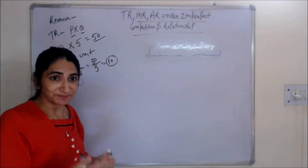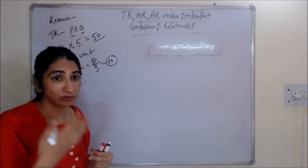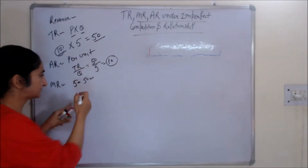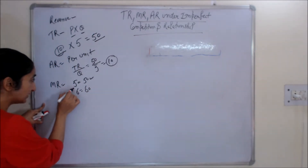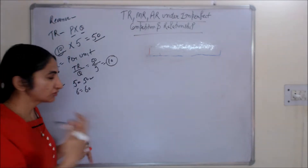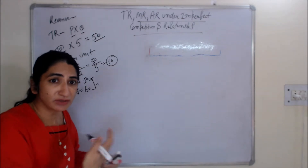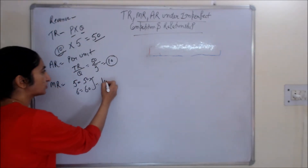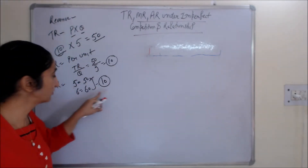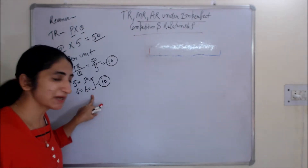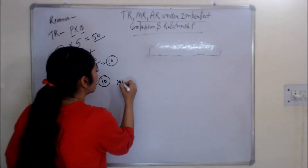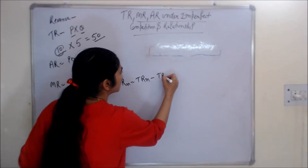Marginal revenue is the additional revenue you receive when you sell one extra unit. For example, if you sell 5 units your total revenue is 50, and if you sell 6 units your total revenue is 60. The difference — that is 10 — is your marginal revenue. So marginal revenue is the change in total revenue when you sell one additional unit.